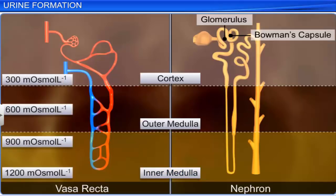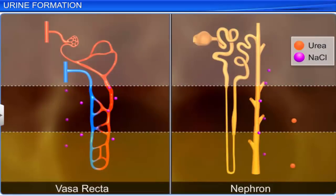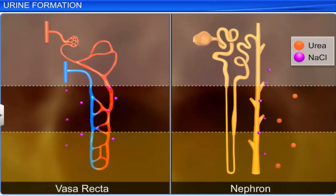The difference in osmolarity between the cortex and the medulla is pronounced: the osmolarity in the cortex is 300 milliosmoles per liter, while it is as high as 1200 milliosmoles per liter in the inner medulla. This difference in osmolarity is caused by the difference in the concentration of urea and sodium chloride.